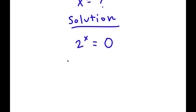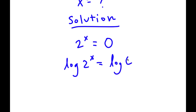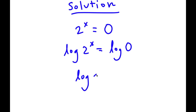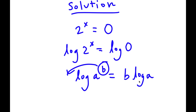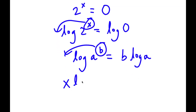What I'm going to do is take the log on both sides. So now I have log of 2 to the power of x is equal to log 0. If I have something in the form log a to the power of b, I can move the exponent b to the front, so it equals b times log a. Here, I have log 2 to the power of x, and I can move x to the front.